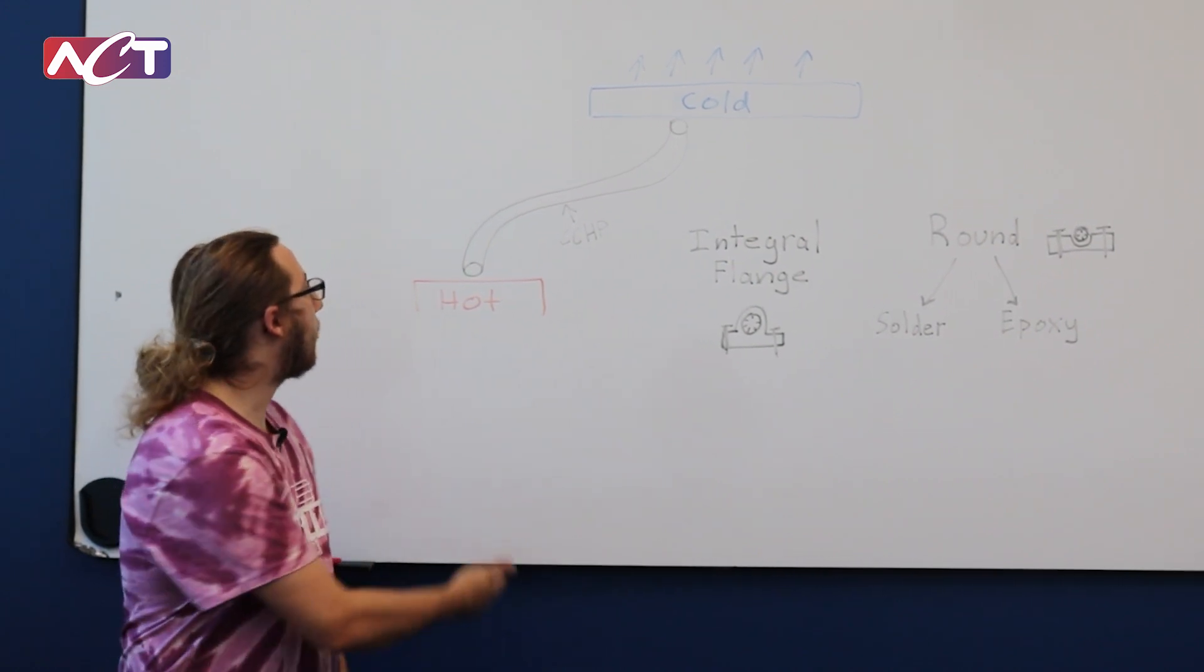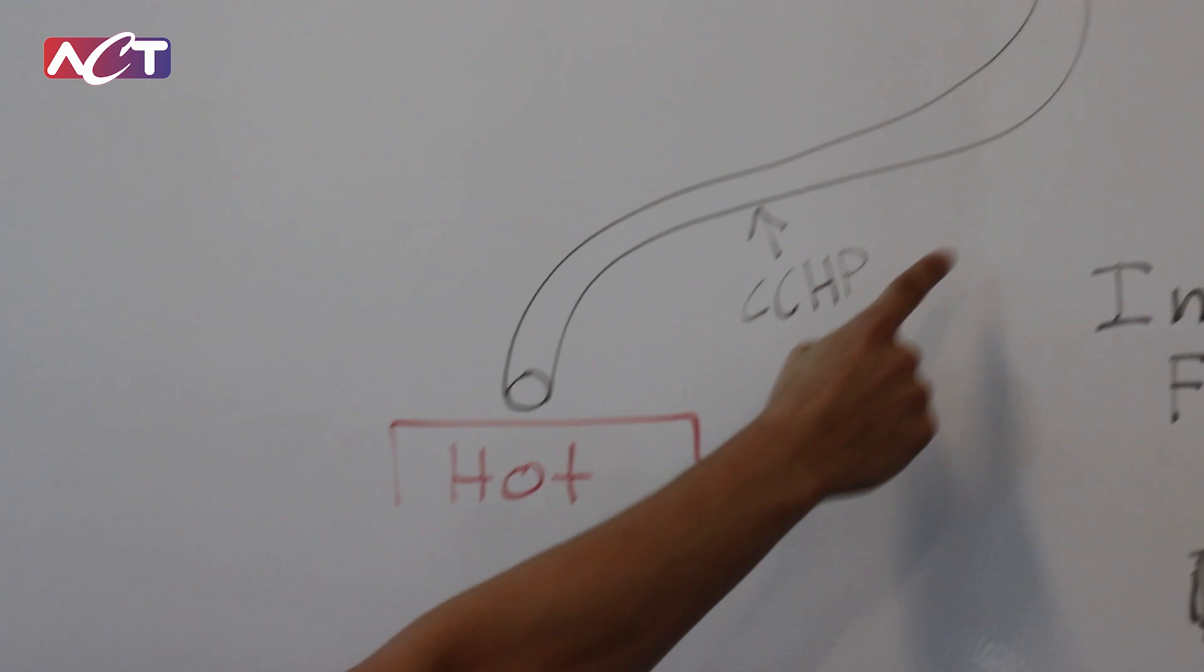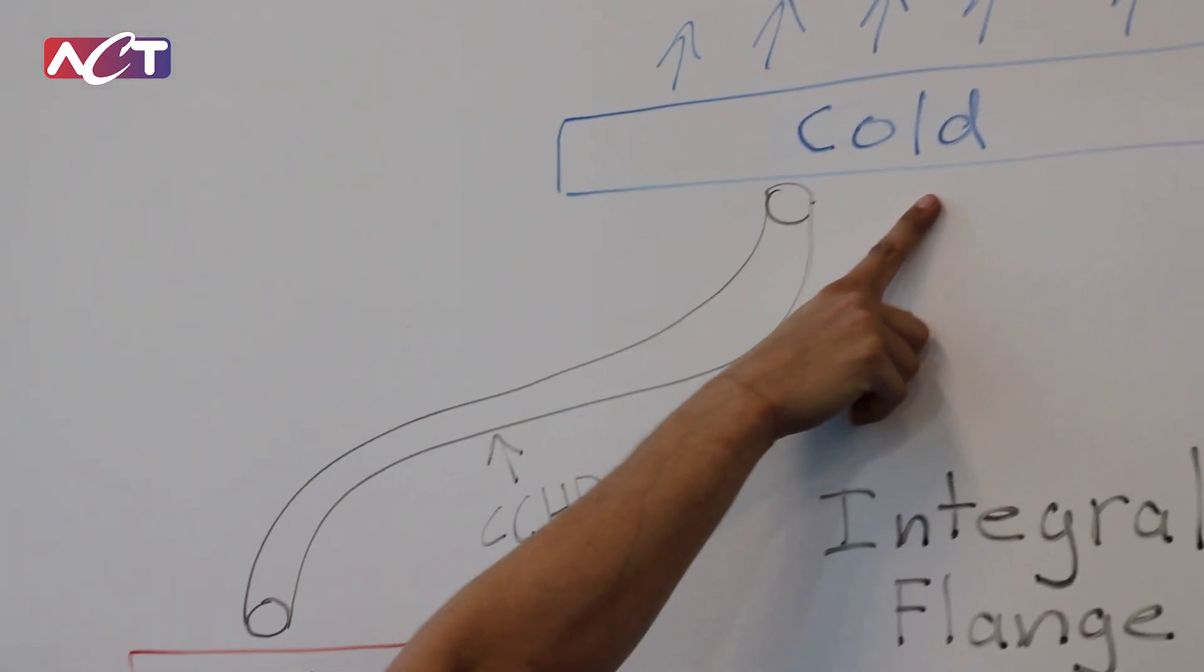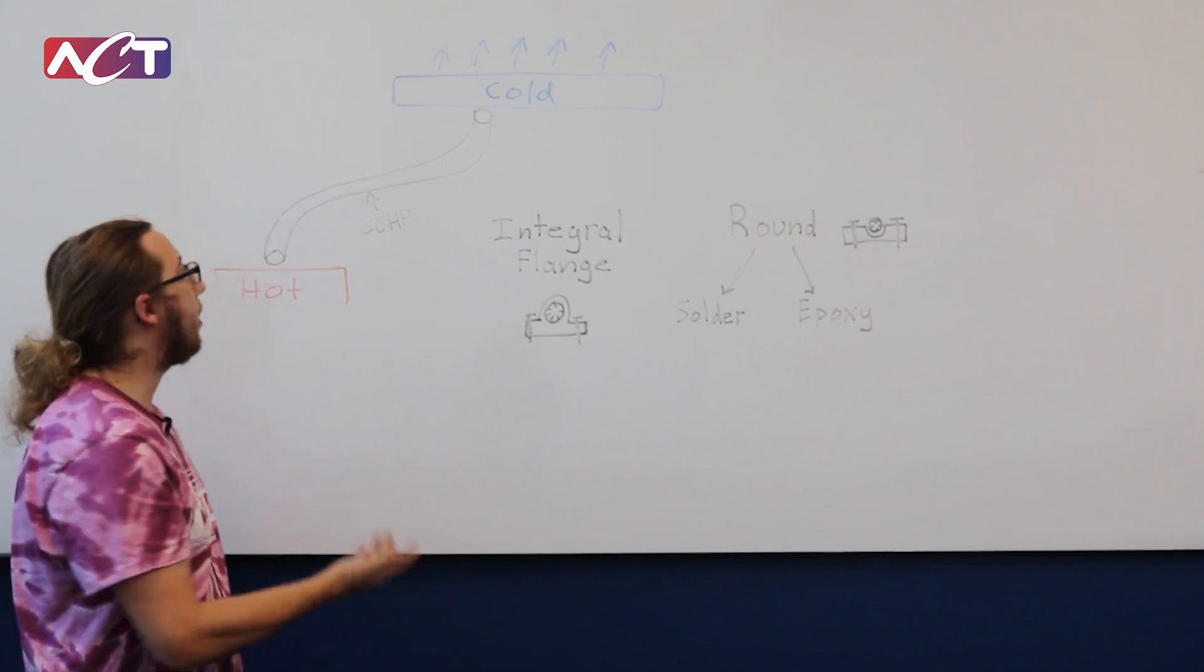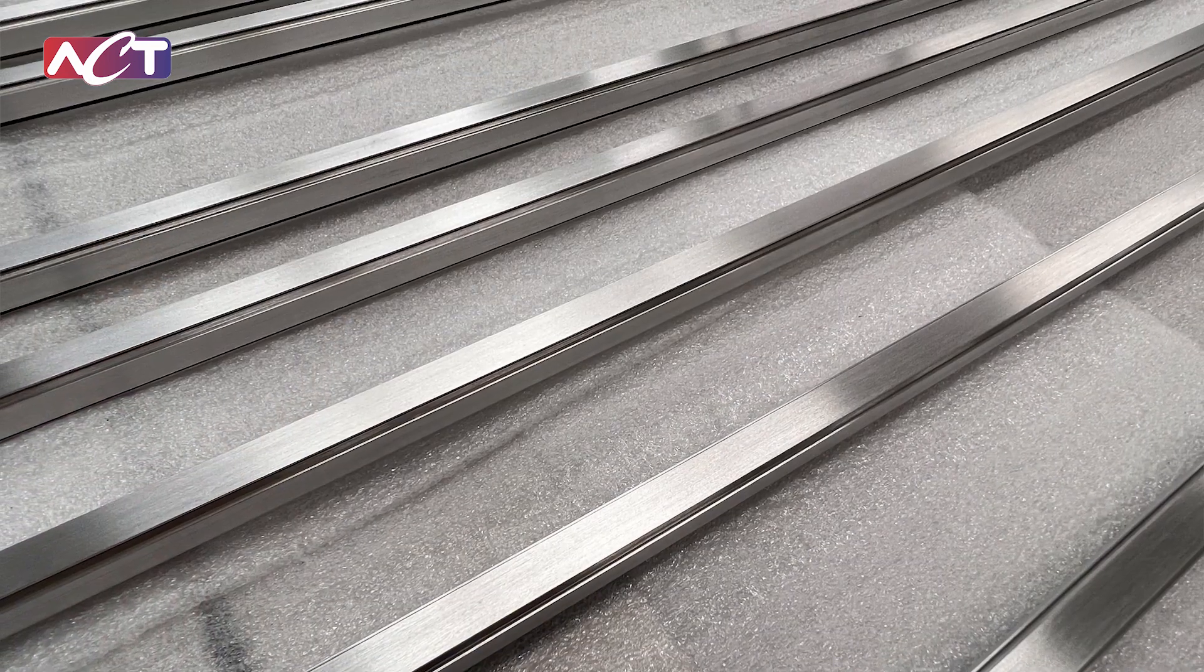So let's say you have a hot component on your satellite and you're trying to take that heat to a cold radiator panel, and a great candidate to do that is an aluminum ammonia constant conductance heat pipe.